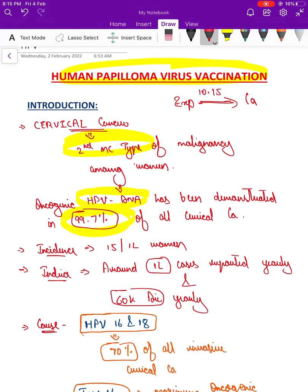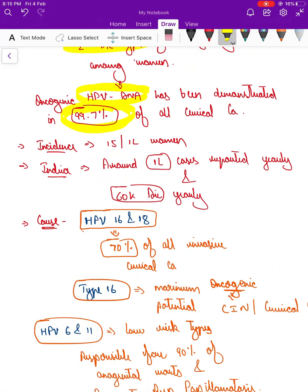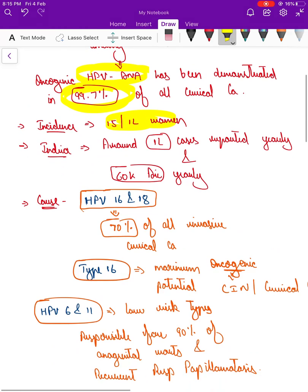It develops as carcinoma in situ and later can develop into malignancy. Incidence is as high as 15 per lakh women. Coming to Indian scenario, there are around 1 lakh cases reported yearly and around 60,000 deaths yearly. There is a huge burden in this society and huge morbidity as well as mortality is being contributed by cervical cancer, and this can be prevented by using the vaccine.